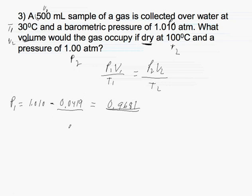If we substitute back into the equation, our P1 is going to be equal to 0.9681. Our V1 is the 500 milliliters. Our T1 is going to be equal to 30 plus 273, which is equal to 303. That goes here, equal to...